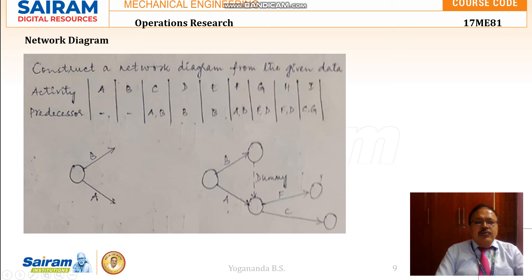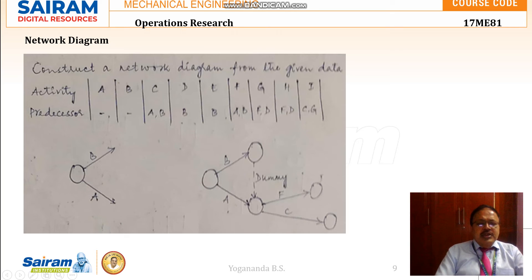We have the activities from A to I: A, B, C, D, E, F, G, H, and I. Predecessor means the activity which comes before. A and B are the activities having no predecessor — we don't have any activities before them. That means A and B are the two beginners, the activities with which the project begins, and they start simultaneously.